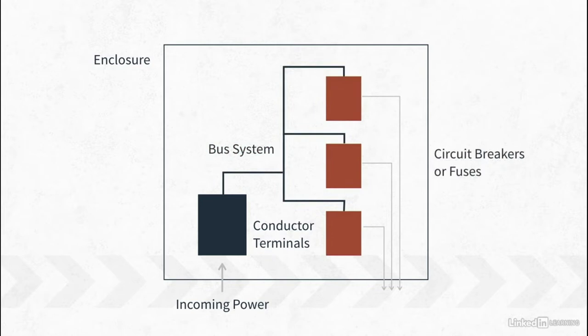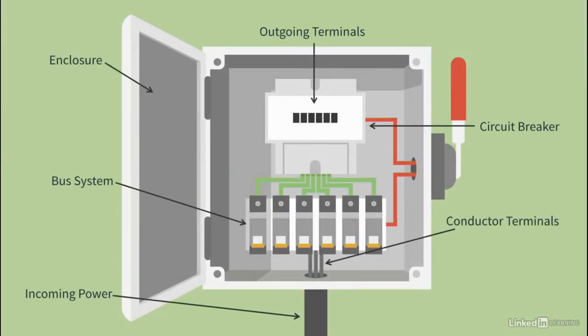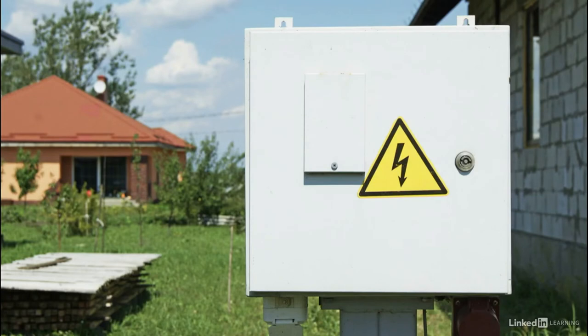They have some sort of overcurrent protection, such as a circuit breaker or fuses, and a connection point or terminal for the outgoing smaller circuits. While many of these are designed for installation indoors in dry locations, some are located outdoors or in wet locations, and they have special enclosures suited for that application to keep the elements away from live electrical parts.